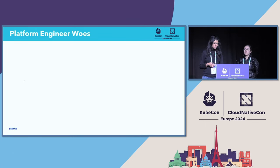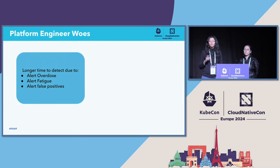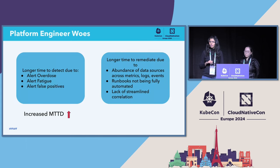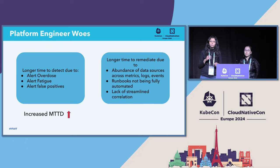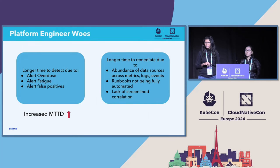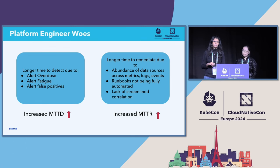There are fundamentally two problems here. There is a longer time to detect problems because of alert fatigue, alert overdose, and false positives, which results in increased time to detect Kubernetes platform issues. Then there is a longer time to remediate because there is an abundance of data sources, and at the point of an incident, you want to quickly get to the root of the problem. The runbooks are not fully automated, and there is not much streamlined correlation between different events happening in the cluster. This results in an increase in MTTR.